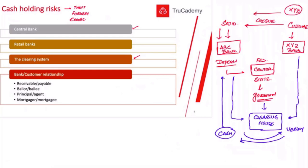But if my customer gives me a check from XYZ Bank, it will be more problematic. As discussed in the previous chapter, cross checks are always more time-consuming. Because different banks' cross checks go through the bank clearing system, it is time-consuming — usually taking three working days to complete the entire bank clearing process.